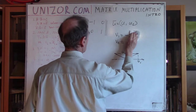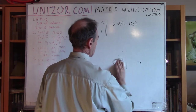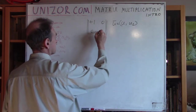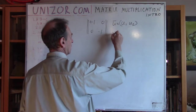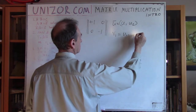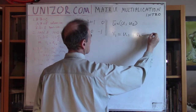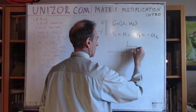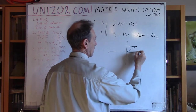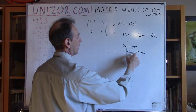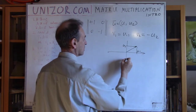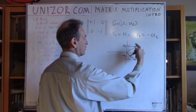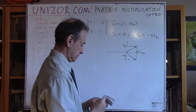Next example: the matrix with entries 1, 0, 0, minus 1. Then v1 would equal u1, and v2 would equal minus u2. So u1 remains intact but u2 changes to minus u2 — that would be a reflection relative to the x-axis.